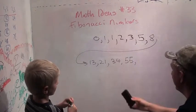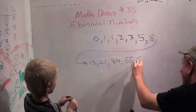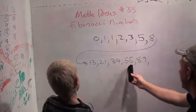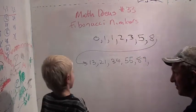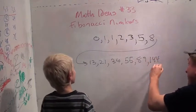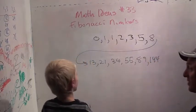And what's the next number? Thirty-four plus fifty-five, which is eighty-nine. Then fifty-five plus eighty-nine, which is one forty-four. And it keeps going forever and ever and ever.